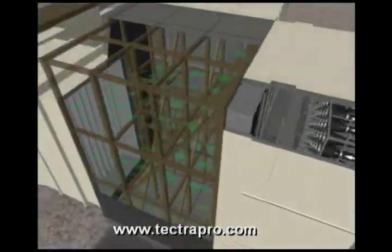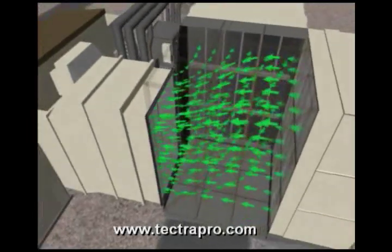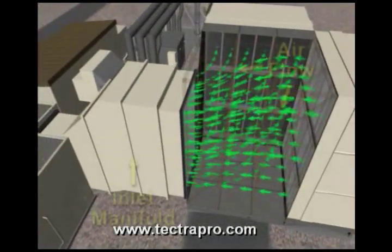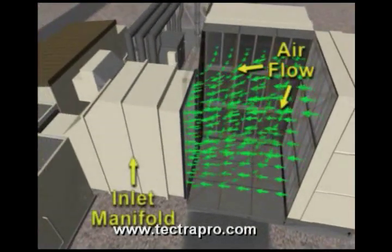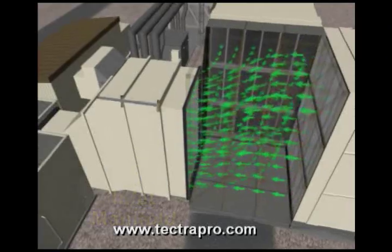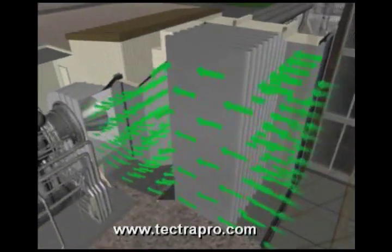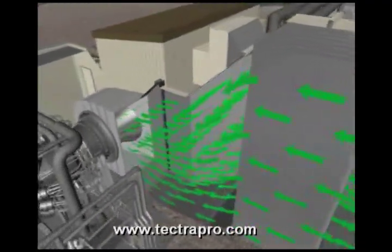The inlet air flows through the two banks of filters and combines in the inlet manifold. From the inlet manifold, the air is drawn through silencers and then directed into the axial flow compressor inlet.